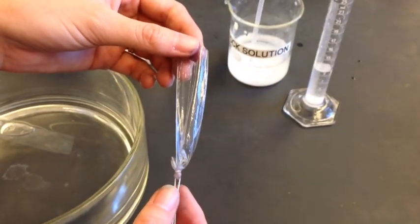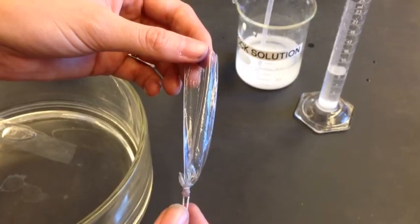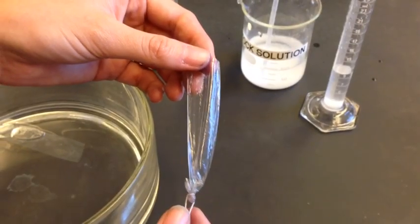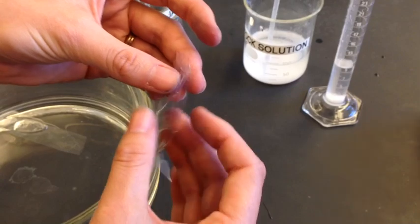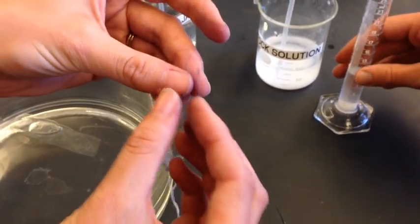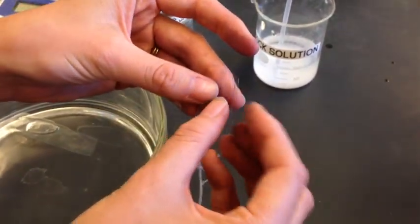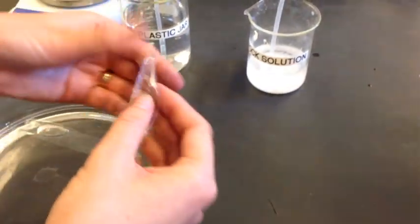Now that one end of your dialysis bag is sealed off, you need to get the stock solution inside. The best way is to open the bag by rubbing it open. If you're having trouble, you can re-wet it and work with it again.